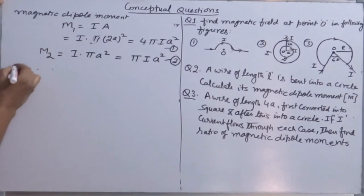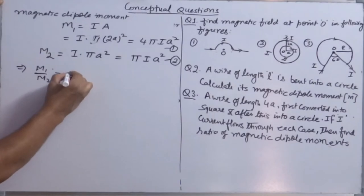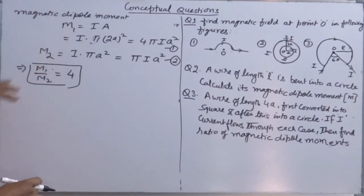You can also find the ratio. M₁/M₂ = 4. This is an additional thing which I told you, sometimes they ask.